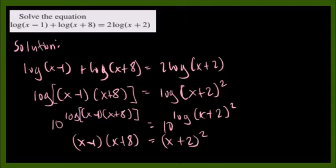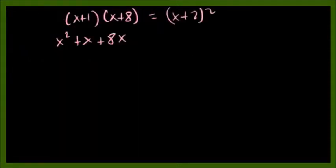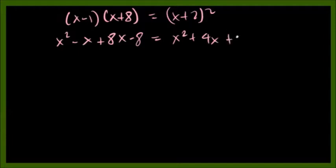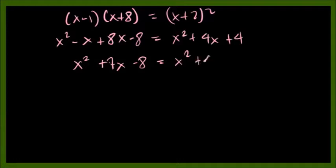After correcting the signs, we have x squared plus 7x minus 8 on the left. The right side is a square of a binomial, giving x squared plus 4x plus 4. So we have: x squared plus 7x minus 8 equals x squared plus 4x plus 4.